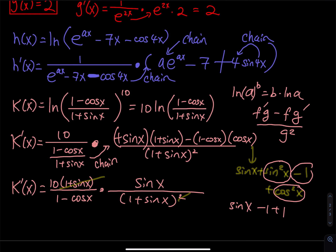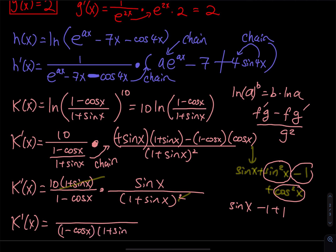After simplification, one factor of (1+sin x) cancels, giving k′(x) = 10·sin(x) / [(1−cos x)(1+sin x)].